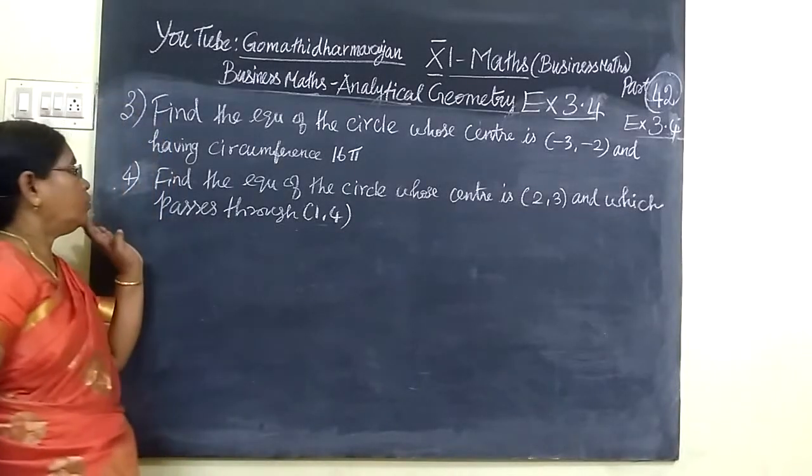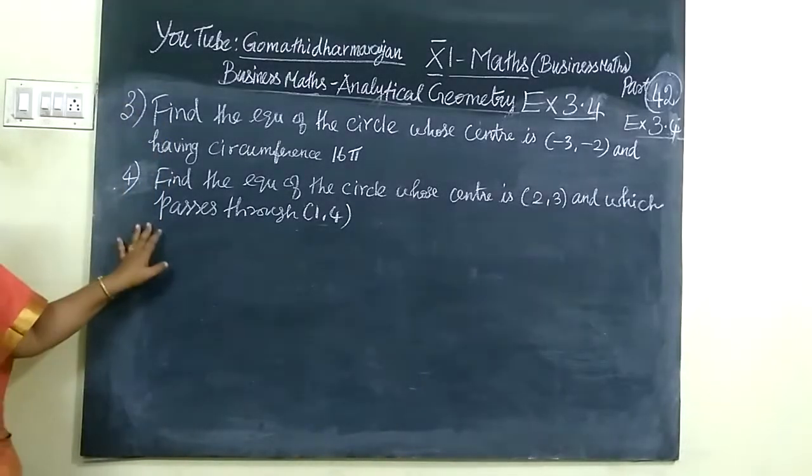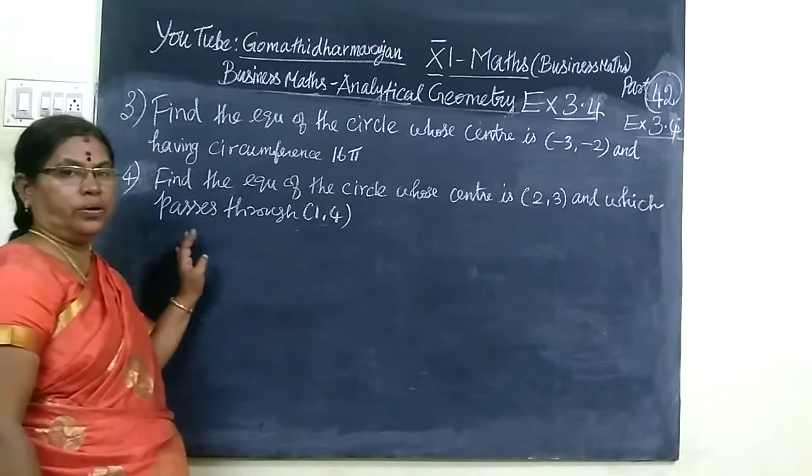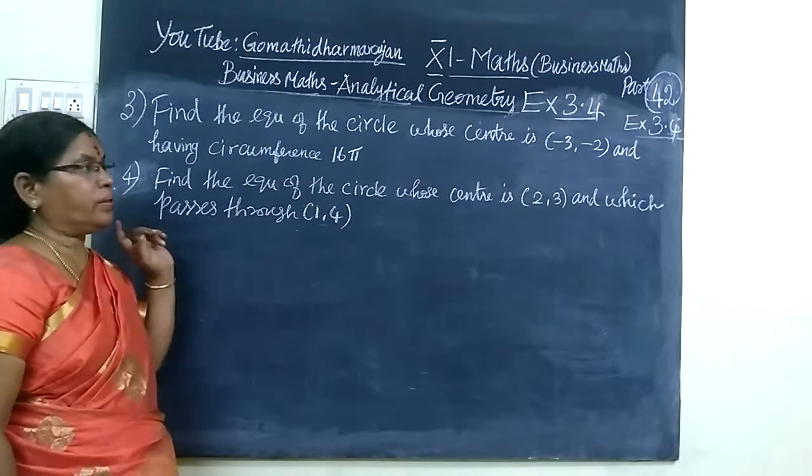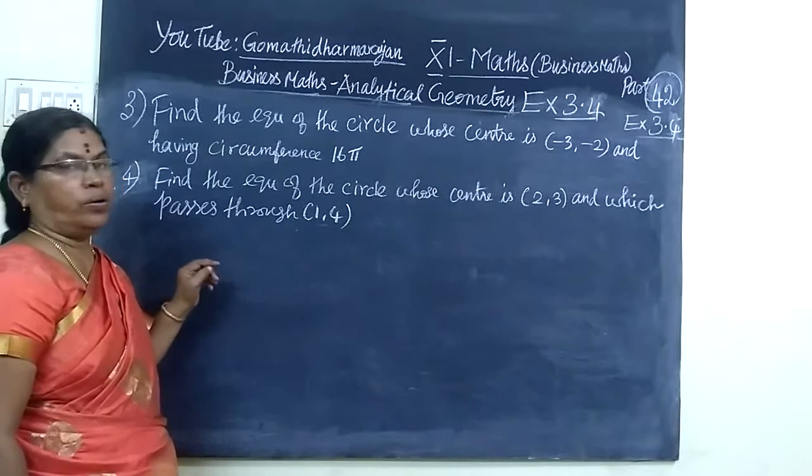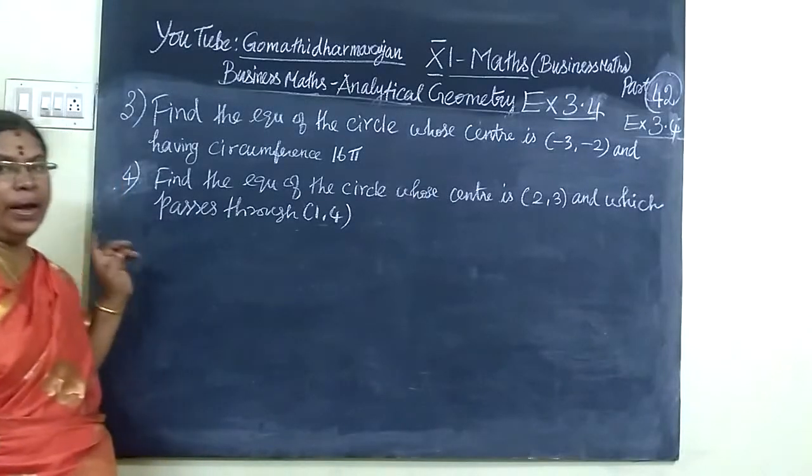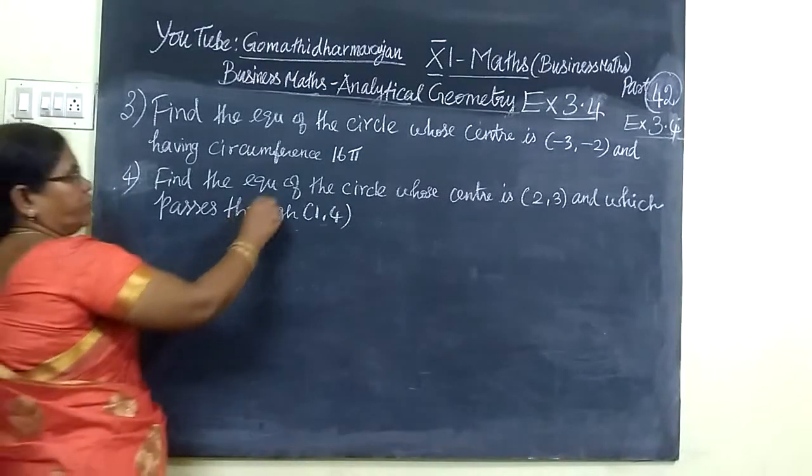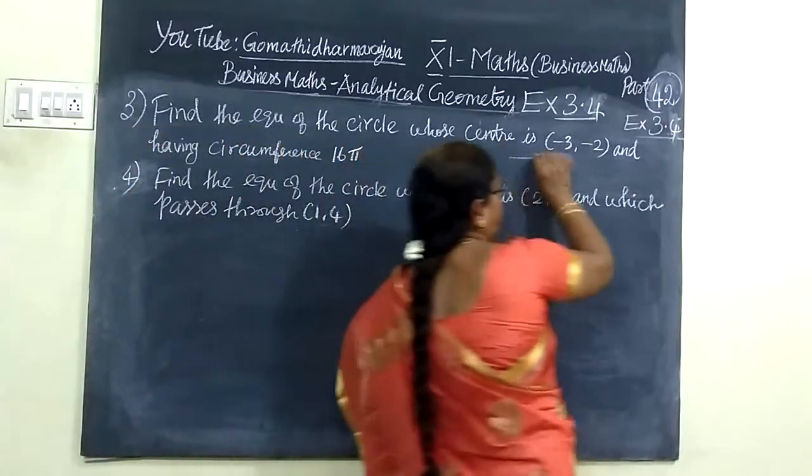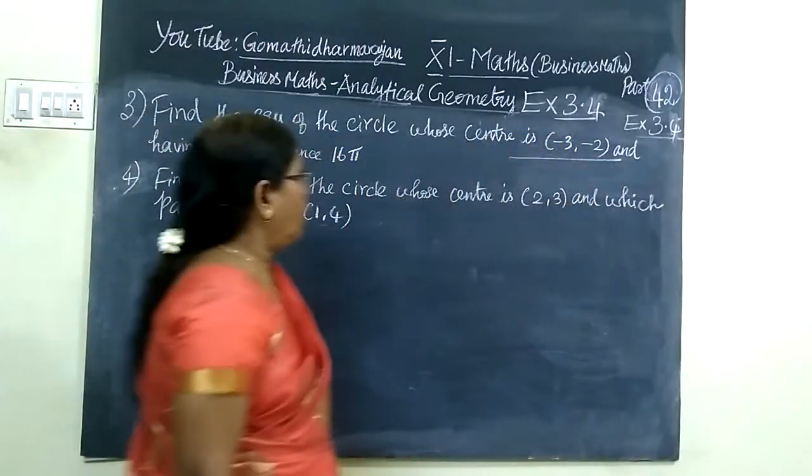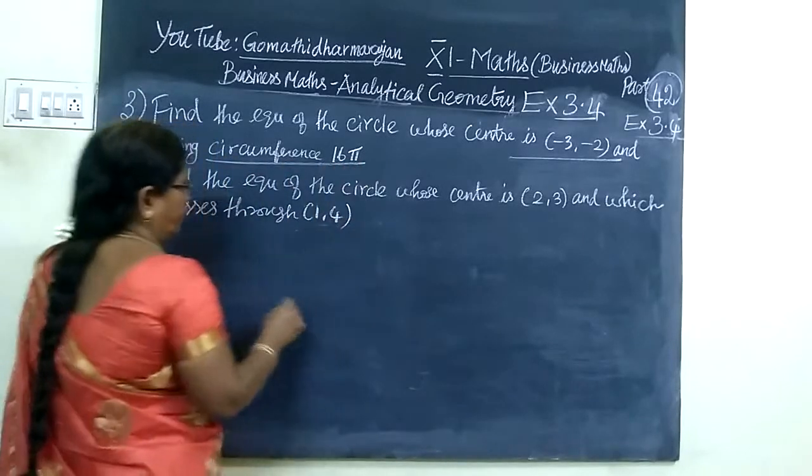Now we see question number 3. We are seeing part 42, Business Math Exercise 3.4, questions 3 and 4. Find the equation of the circle whose center is (-3, -2) and having given circumference.